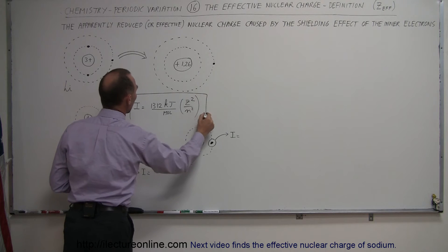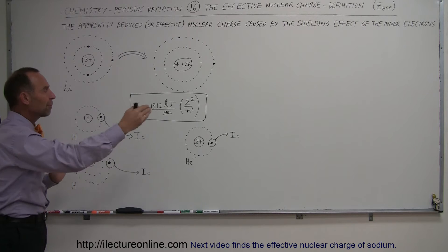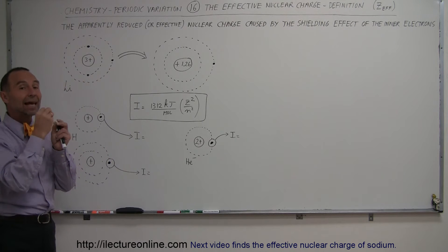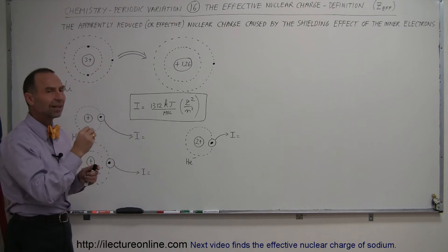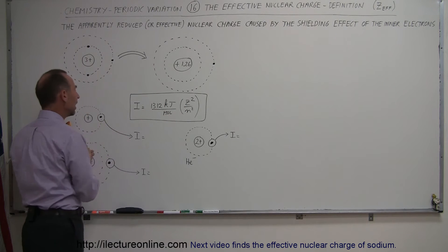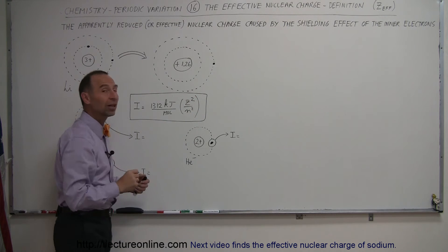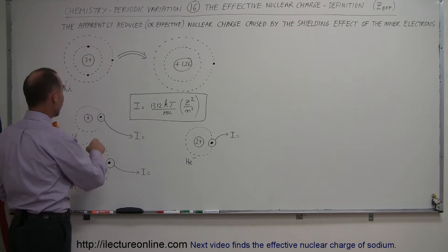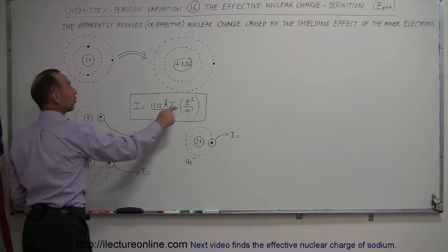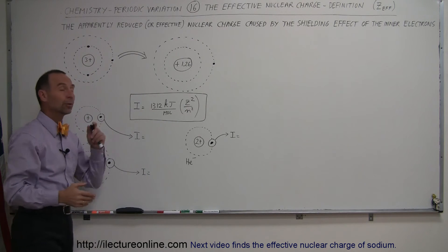It turns out there is a useful equation. The ionization energy to remove a single electron from an atom — provided it is the last electron remaining — equals the base ionization energy for hydrogen, 1312 kilojoules per mole, times the nuclear charge squared divided by the energy level squared: IE = 1312 × Z²/n². For hydrogen, Z = 1 and n = 1, so IE = 1312 × 1²/1² = 1312 kilojoules per mole.